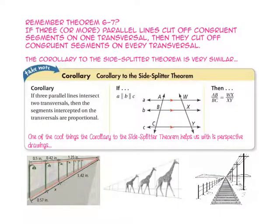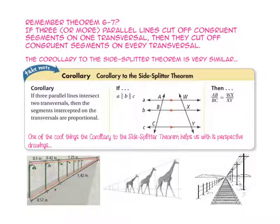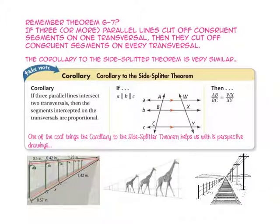Remember in theorem 6-7, it said if three or more parallel lines cut off congruent segments on one transversal, then they cut off congruent segments on every transversal. The corollary to the side splitter theorem is very similar — it says if three parallel lines intersect two transversals, then the segments intercepted on the transversals are proportional. One of the cool things the corollary helps us with is perspective drawings. That's the side splitter theorem hard at work in art.